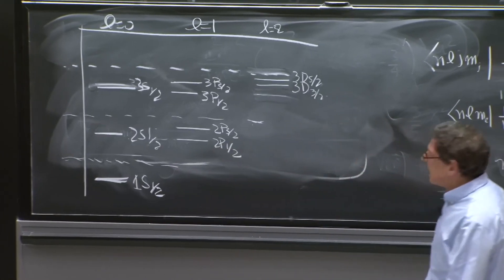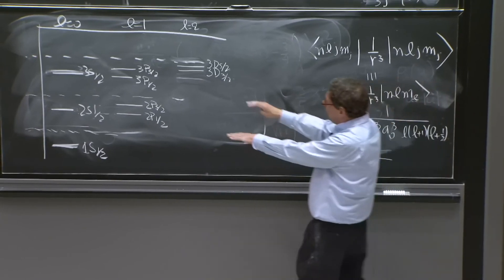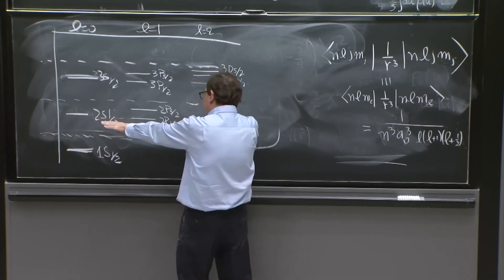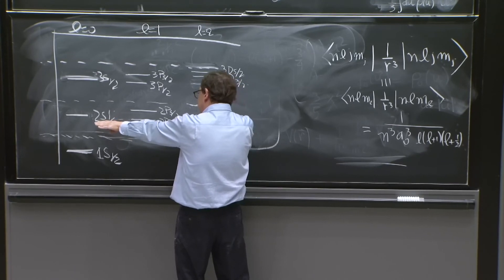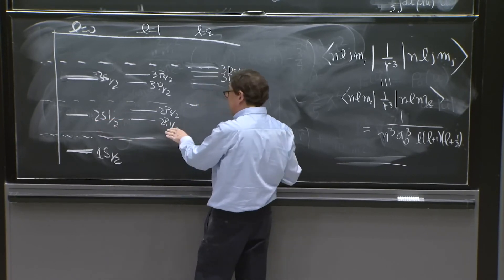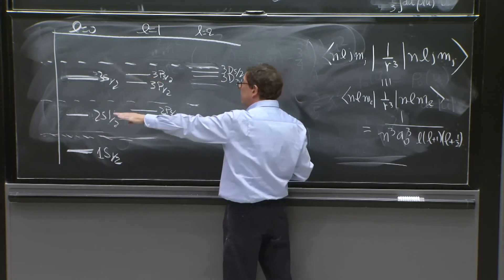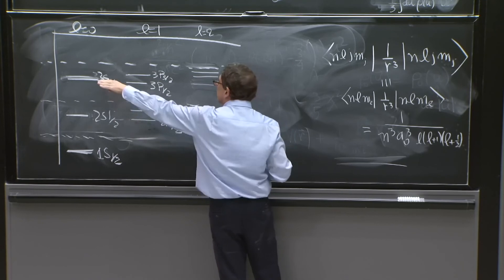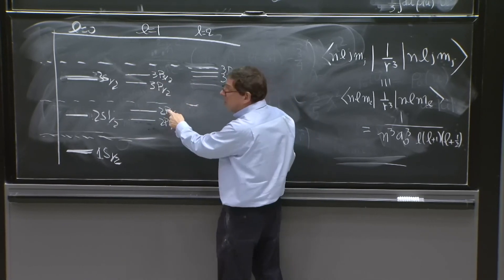So this is our final picture of the hydrogen atom. All the states get pushed down. The various multiplets with different l, but the same j are still degenerate. This formula has no l dependence. So these two are the same. These two are the same. These two are the same.